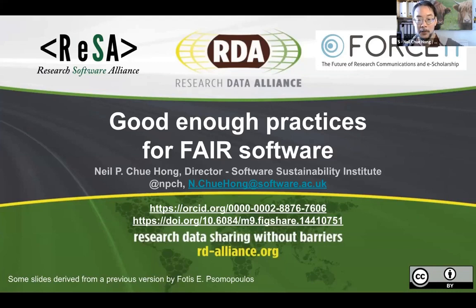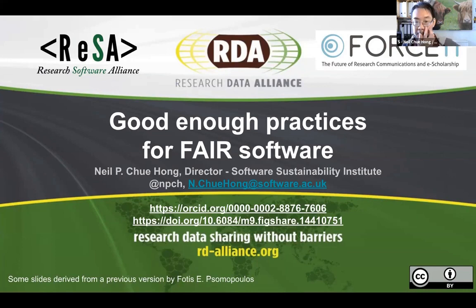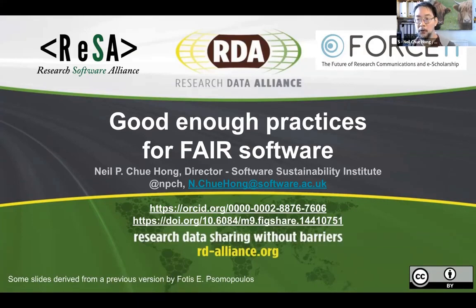My name is Neil Chuhung. I'm director of something called the Software Sustainability Institute, based at the University of Edinburgh. I'm also involved in a group developing FAIR principles for software, as part of the Research Software Alliance, the Research Data Alliance, and the FORCE11 groups. I'm going to talk about what FAIR means in the context of software and give some advice on how you can make your software FAIR.